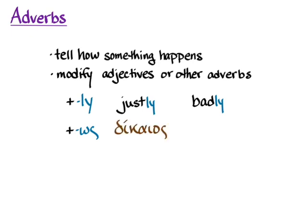Then we go to the genitive of that masculine singular, and we take off the ending — omicron, upsilon (ου). We add to that our new adverb ending, -os. So 'dikaios' means 'justly'.